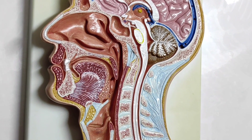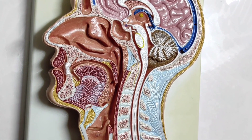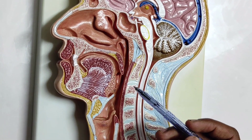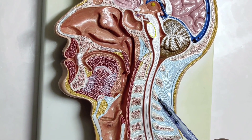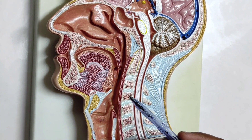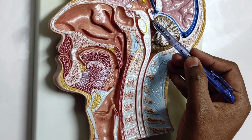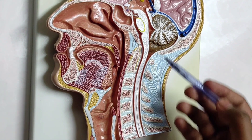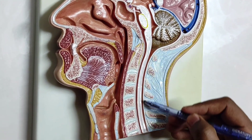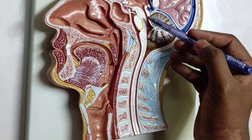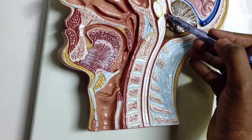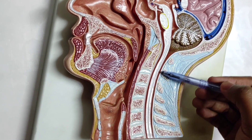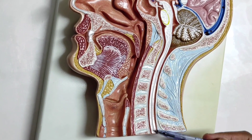We have the pineal gland at this position in our brain. In the same way, this is the medulla oblongata, which includes the midbrain, pons, and medulla — and as a whole it is called the medulla oblongata.